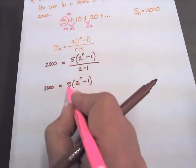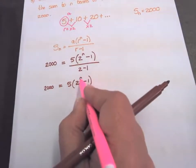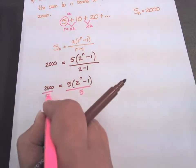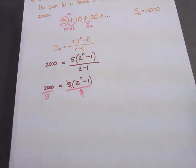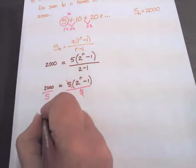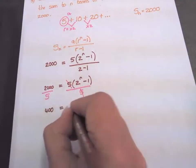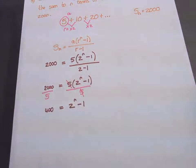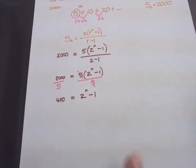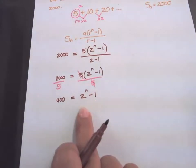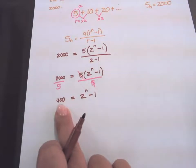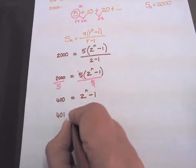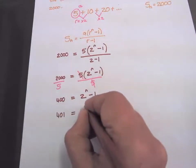I want to get rid of the 5 because I want to solve for n. Divide by 5 both sides, 5's cancel out. And I get 400 equals 2 to the power of n minus 1. Take this minus 1 over to the left hand side so it becomes a plus 1. And then we have 401 equals 2 to the power of n.